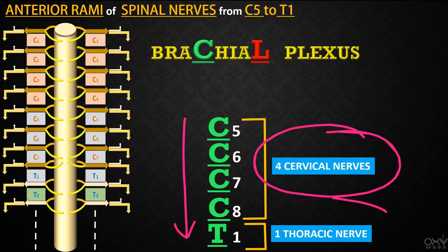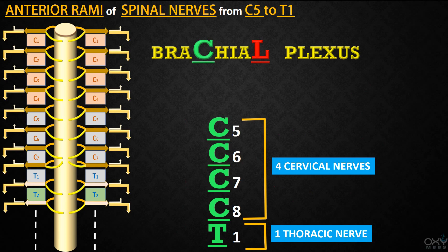From C5 to T1, there are four cervical nerves and one thoracic nerve — meaning a total of five nerves form the brachial plexus. Now, how will you remember that the brachial plexus starts from C5 and ends at T1?